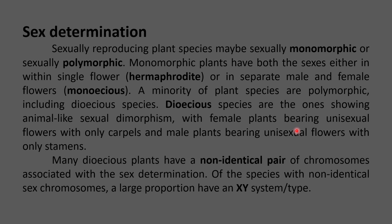A minority of plant species are sexually polymorphic, which includes dioecious species. Dioecious species show animal-like sexual dimorphism with two different plants — a female plant and a male plant. The female plant bears unisexual flowers containing only female reproductive organs (carpels), and the male plant bears unisexual flowers containing only male reproductive organs (stamens). Many dioecious plants have a non-identical pair of chromosomes associated with the determination of sex in the progeny.